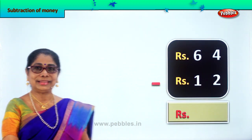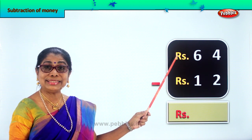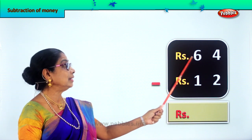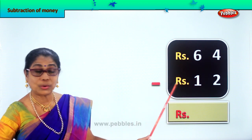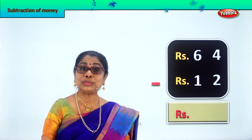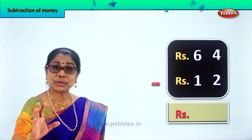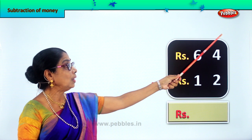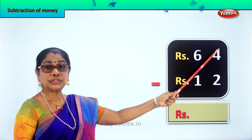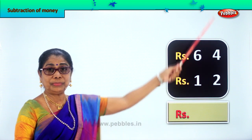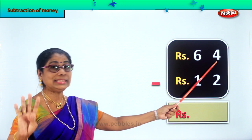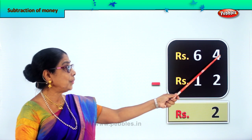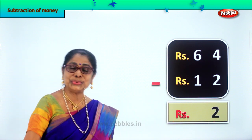Look what you have — isn't it colourful? We have here rupees 64 minus rupees 12. That is, 64 rupees take away 12 rupees. What is the balance? Now when we do subtraction, we do the ones place first, then go to the tens. In the ones place we have 4 minus 2. 4 minus 2 gives you 2.